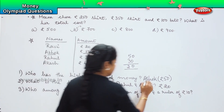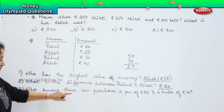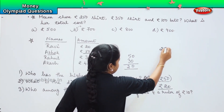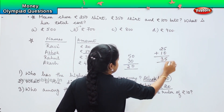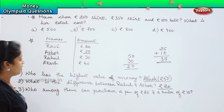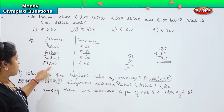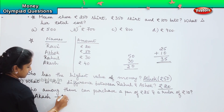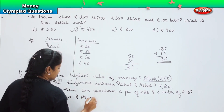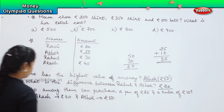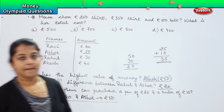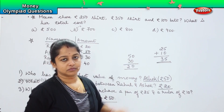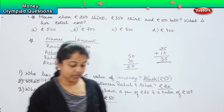Who among them can purchase a pen of 25 rupees and a ruler of 10 rupees? What is the total? If we add pen of 25 and ruler of 10, they should have a minimum of 35 rupees. So Akash and Ashok — Akash has 40 rupees and Ashok has 50 rupees, so these two can purchase a ruler and a pen. Whereas Rahul and Ravi cannot purchase because their total is lesser than the value of the goods.